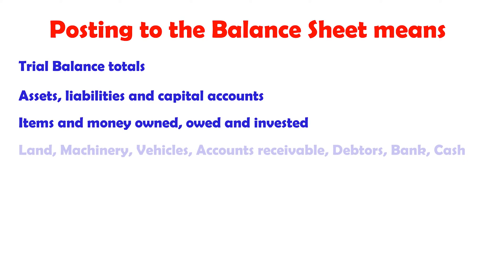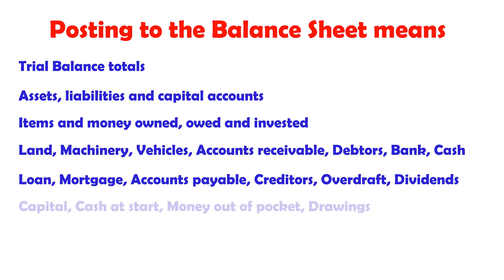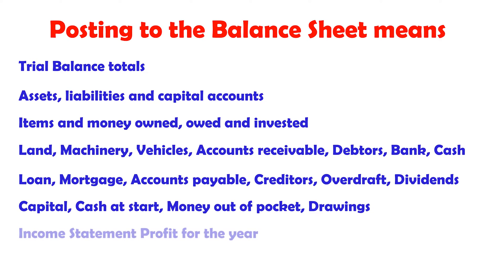Balance sheet items include: land, machinery, vehicles, accounts receivable, debtors, bank, cash, loan, mortgage, accounts payable, creditors, overdraft, dividends, capital, cash at start, money out of pocket, drawings, income statement, and profit for the year.